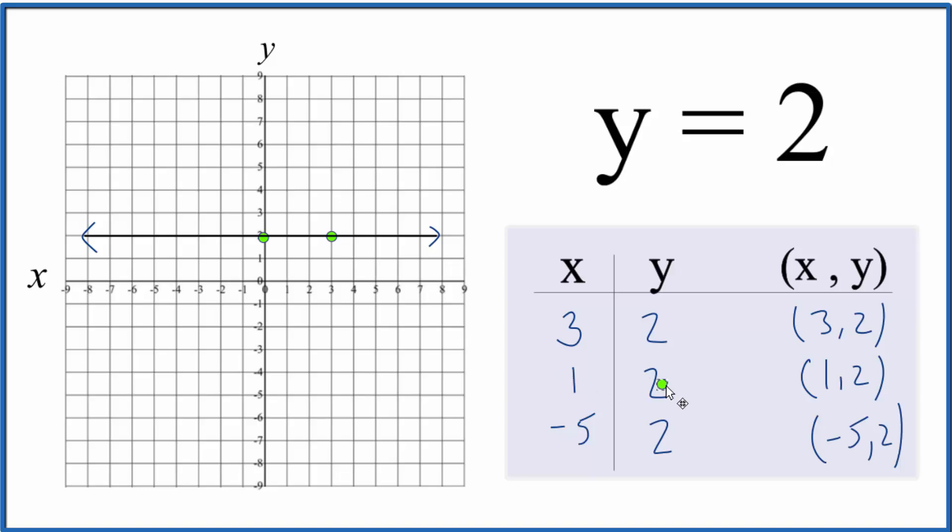We have x is 1, y is 2. So x is 1, y is 2. So these points fall right there on our line.